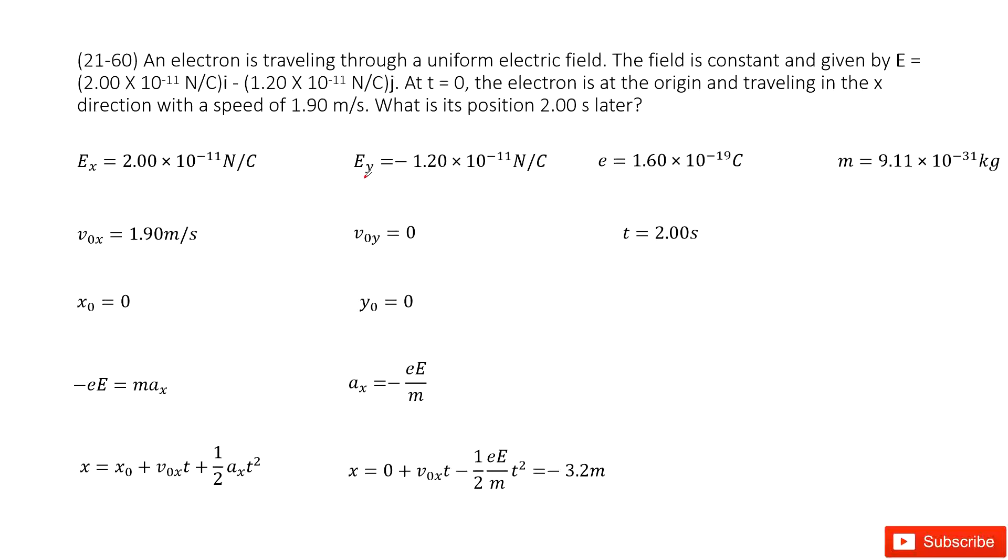Chapter 21 is about electric charge and electric fields. We have an electron traveling through a uniform electric field. This electric field is given in the format of a vector, so you can write the Ex and Ey there. We can also check our textbook to find the charge for the electron and the mass for this electron.